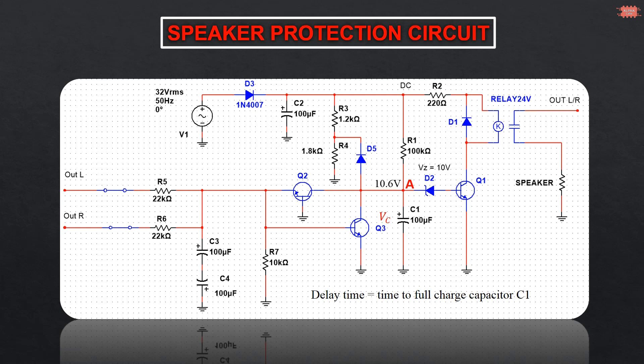I will make another video to share how to calculate the delay time of this circuit. In this circuit, you can see there are resistor R3, resistor R4, and diode D5. What is their function?